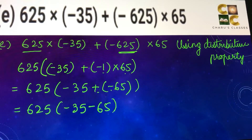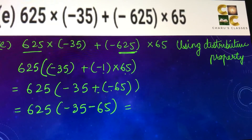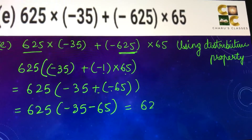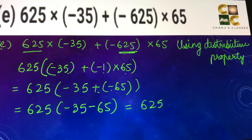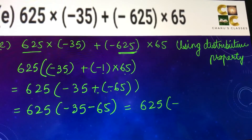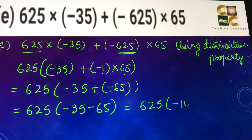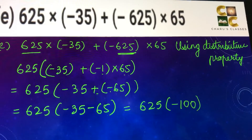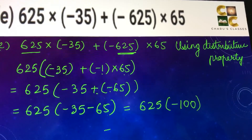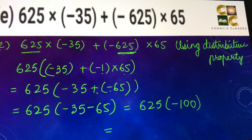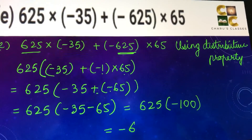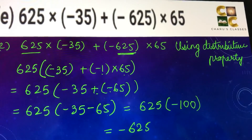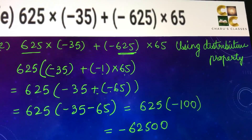So this is 625 multiplied by minus 100, and this will be minus 62,500.